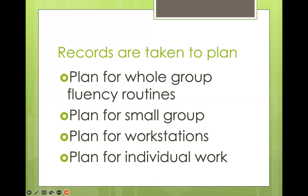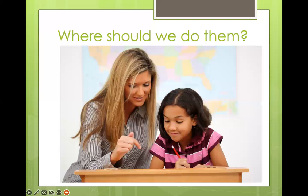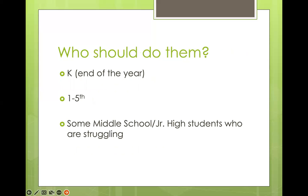You always want to think about what the child did — not just right or wrong, but what they actually did. You then use the records to plan whole group, small group, workstations, individual work, and homework. You should do running records at the beginning, middle, and end of the year. For interventions with older students who lack basic skills, you'd do them more frequently. You can pull kids aside anywhere you'd do a reading running record.